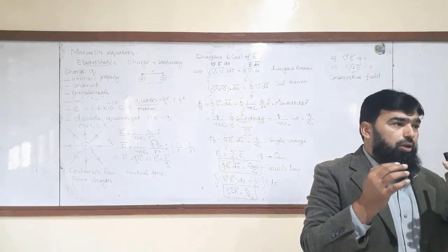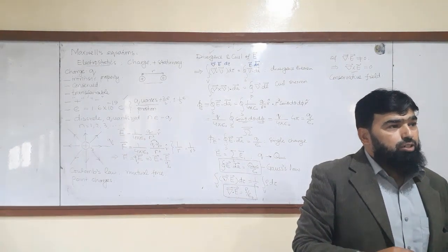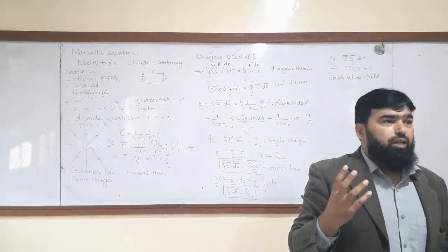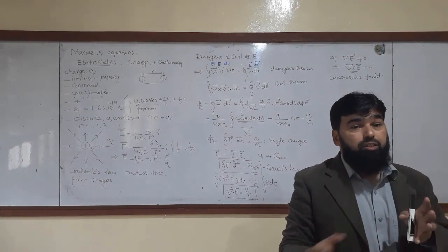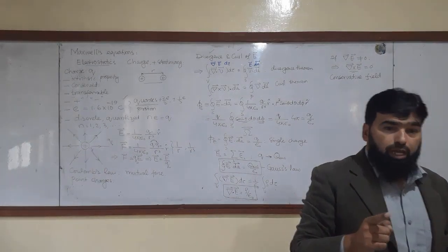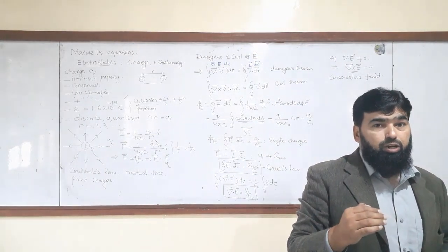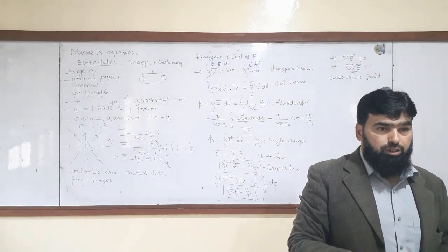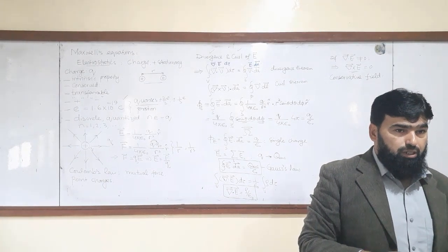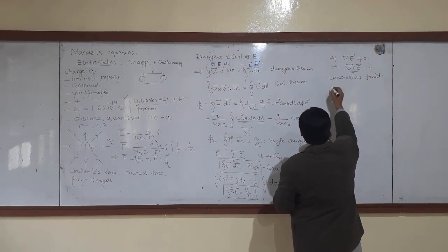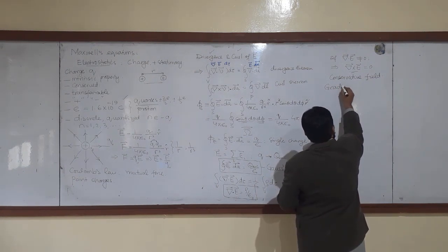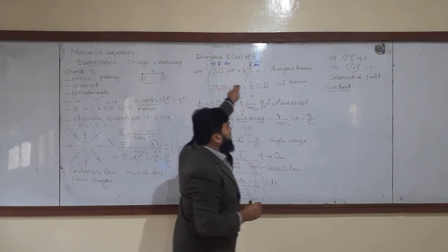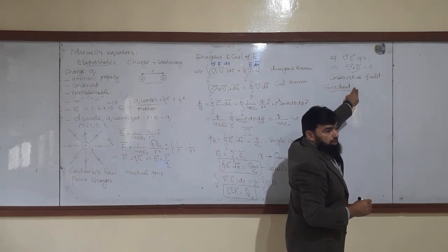If the curl of the electric field is zero, then the electric field lines go in straight lines — they do not turn. So the electric field, being the result of something, means that underlying thing will also go in a straight line and will not curl or twist. This gives us the idea of electric potential.